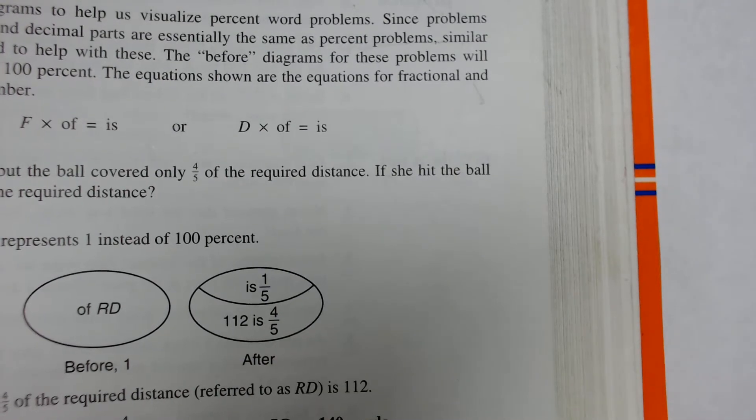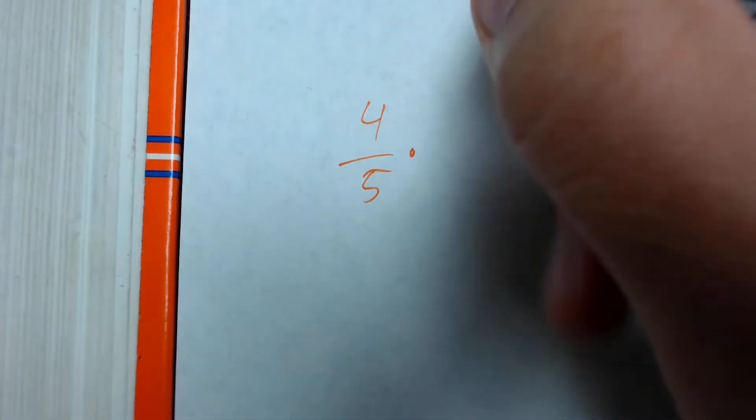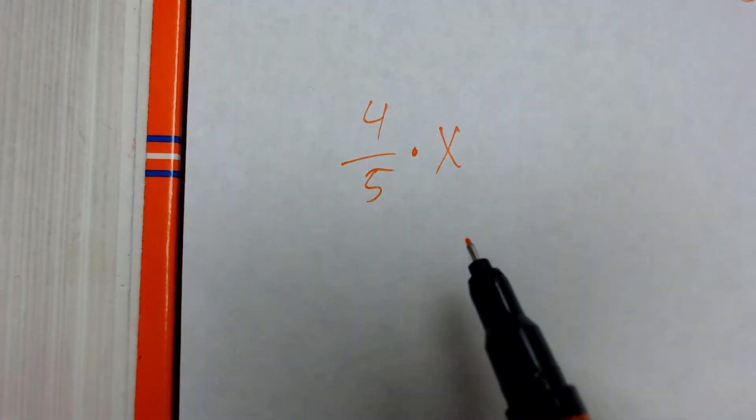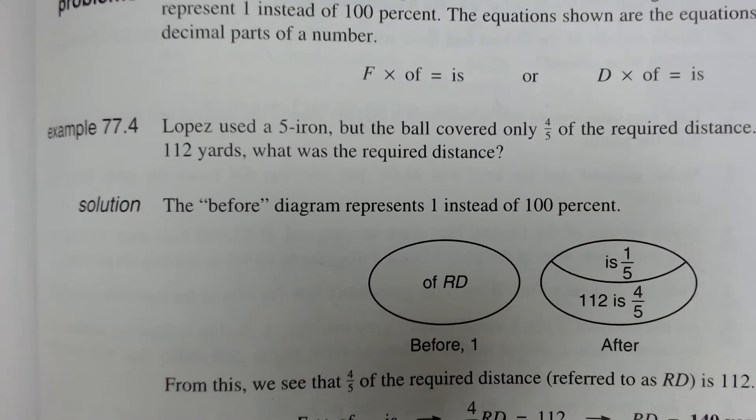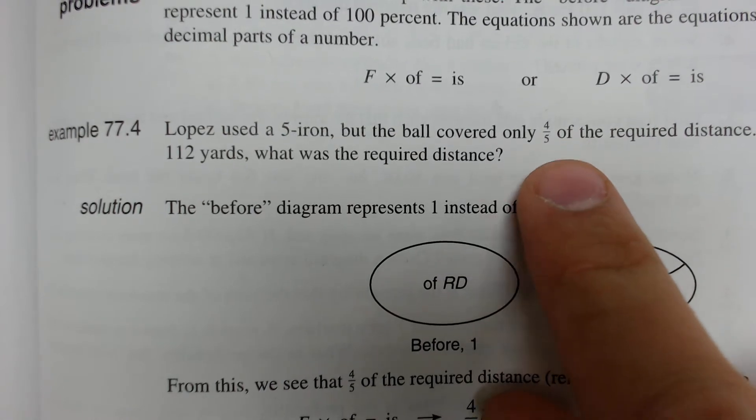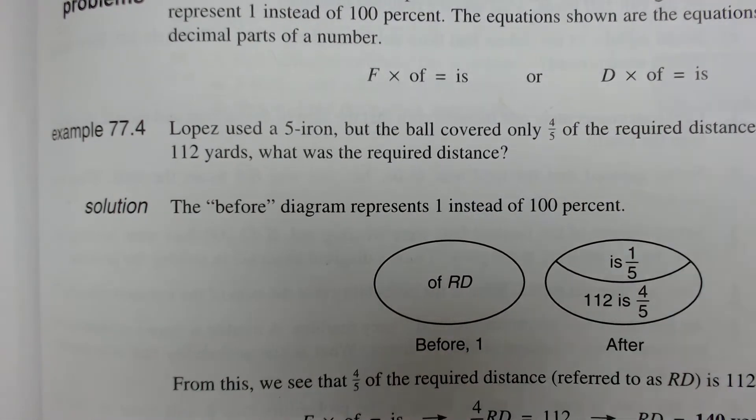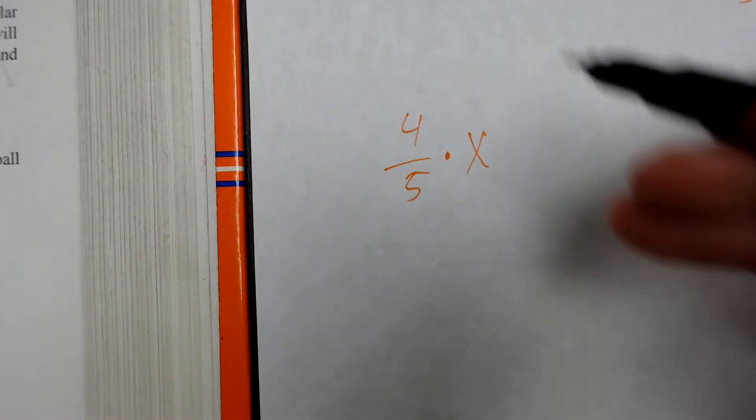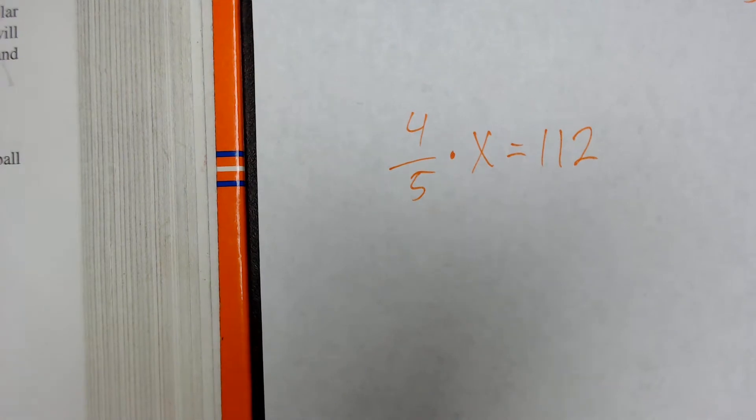I'll go over to my work paper. Here, 4 over 5 of meaning times x, the required distance, what we do not know. Now, it says that she hit the ball 112 yards. So, this is where we have to use a little bit of logic. We have to logically understand that 4 fifths of the required distance is equal to 112 yards. So, then we take this expression. We make it equal to 112. Now, all we have to do is find out what x is equal to.